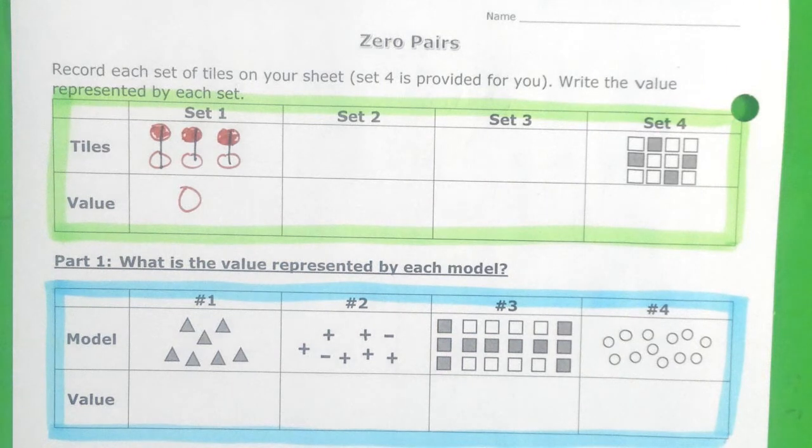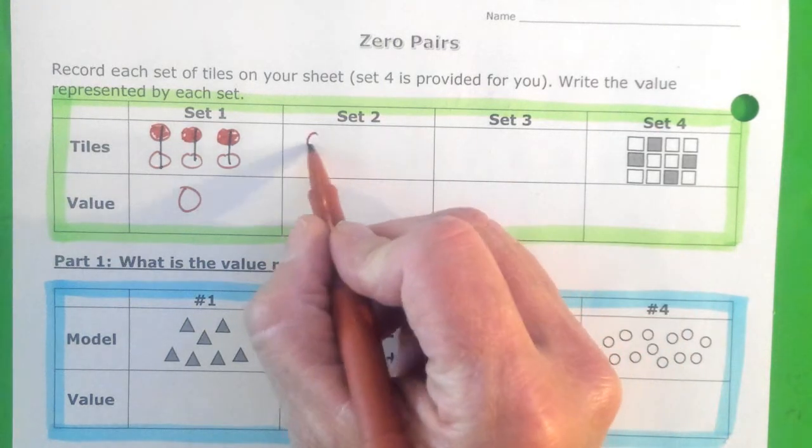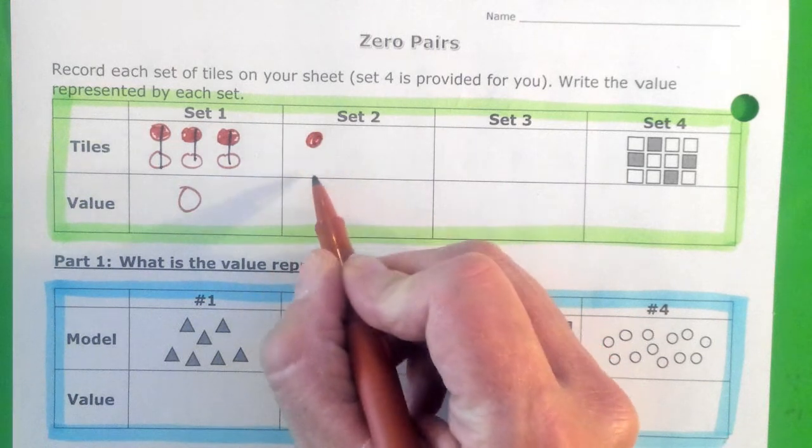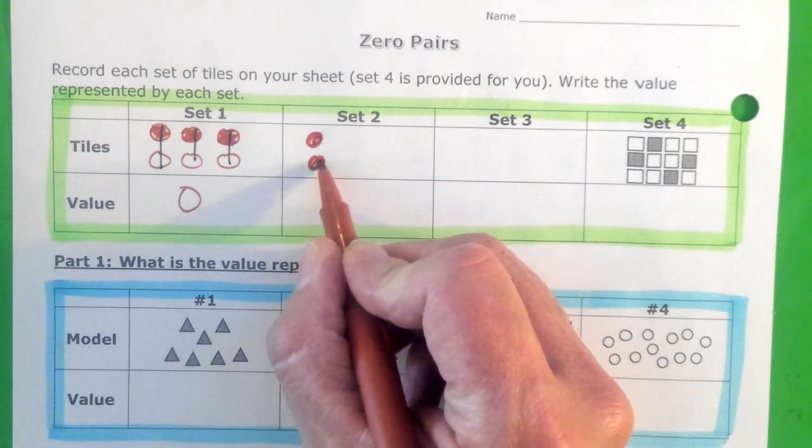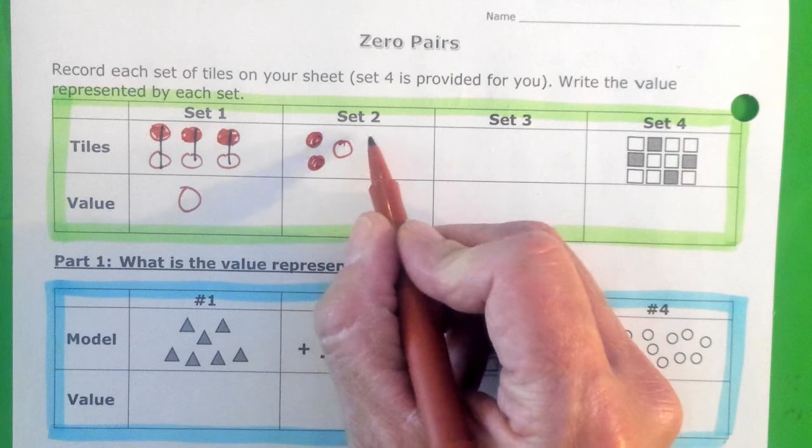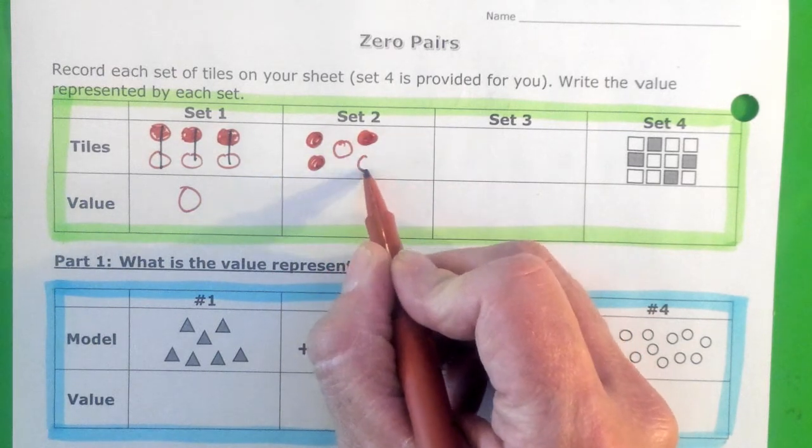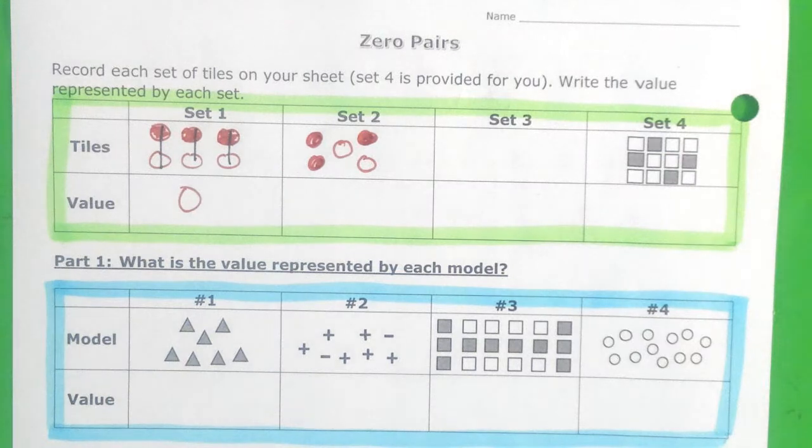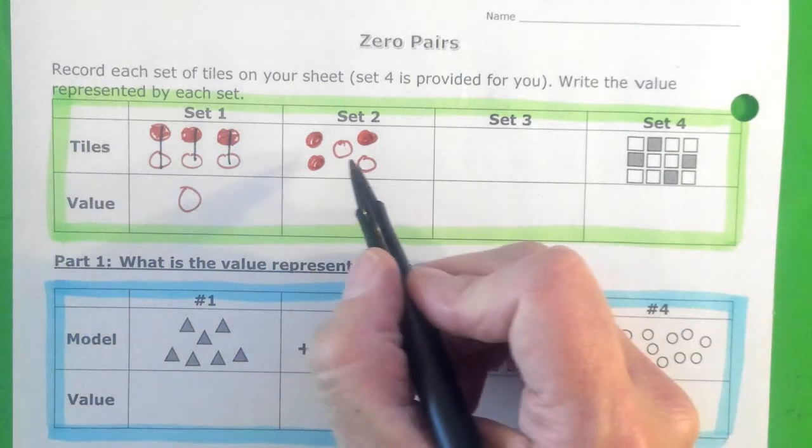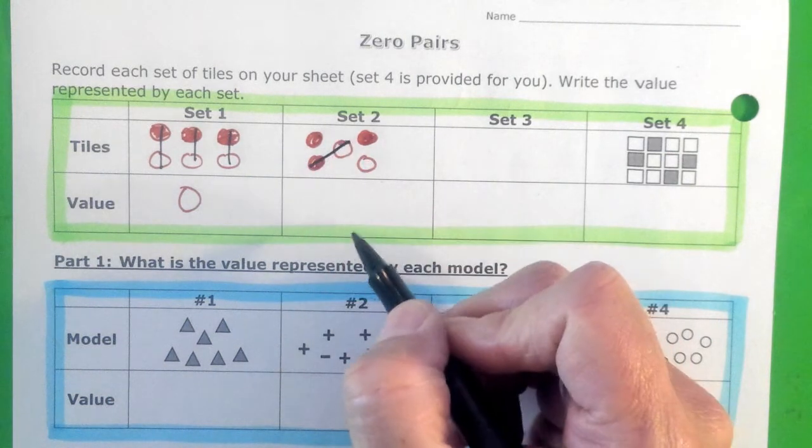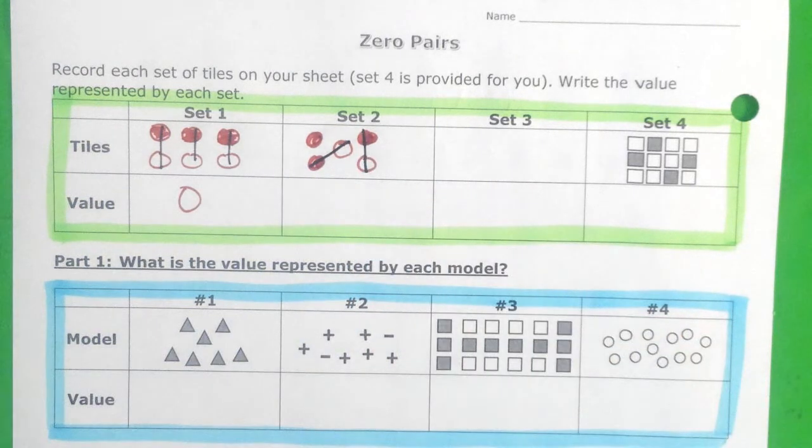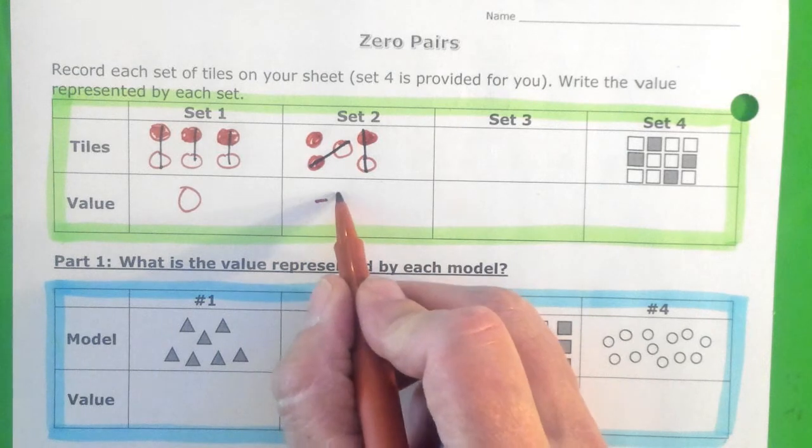Our set two looks like this. There were two negatives here. And then there was a positive here. And then a negative here. And another positive here. So I look to find my zero pairs. A positive and a negative cancel out. A positive and a negative cancel out. So then what was left over? Negative one.